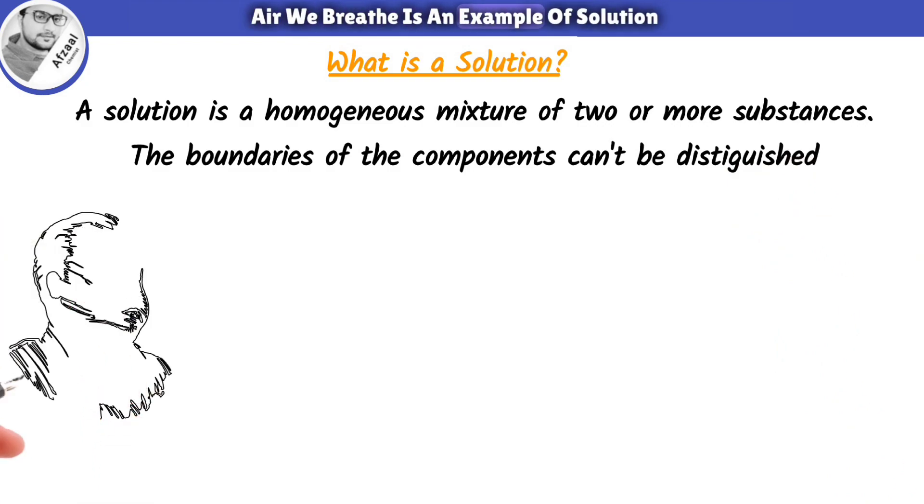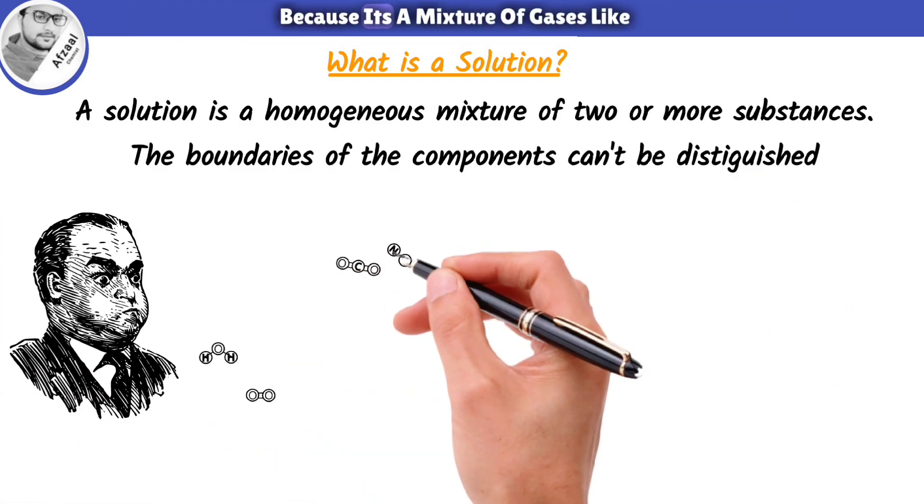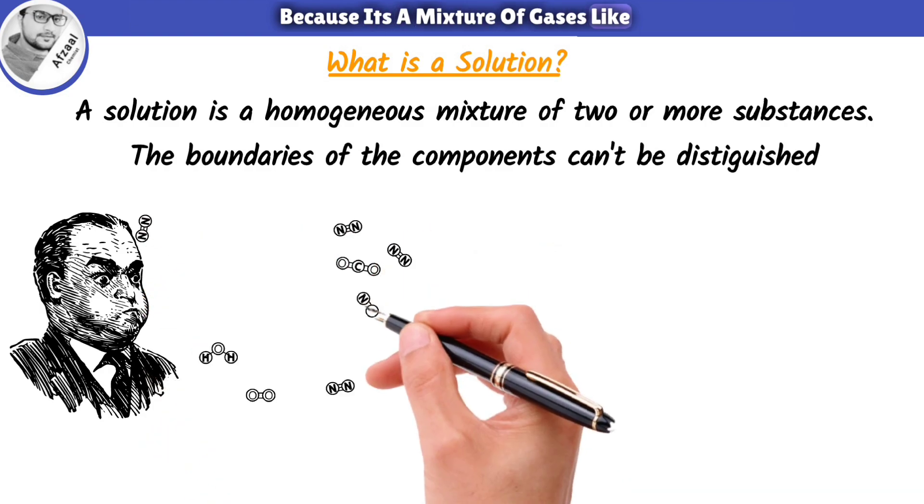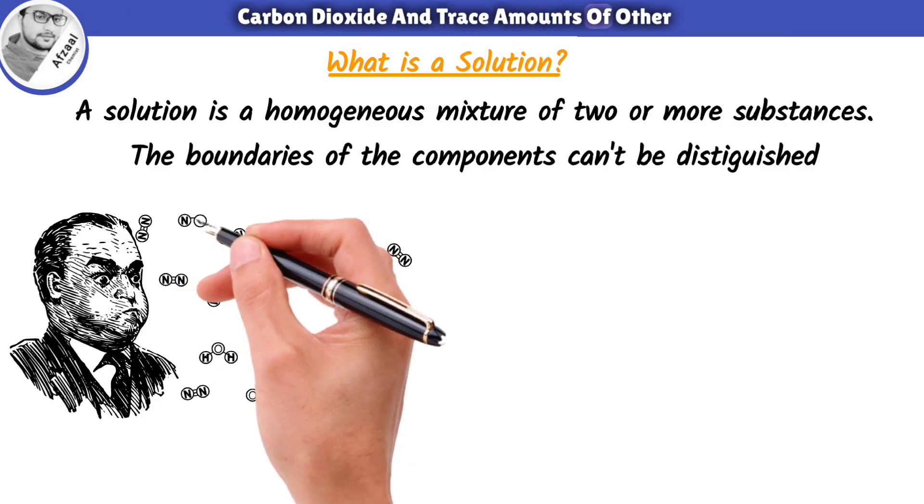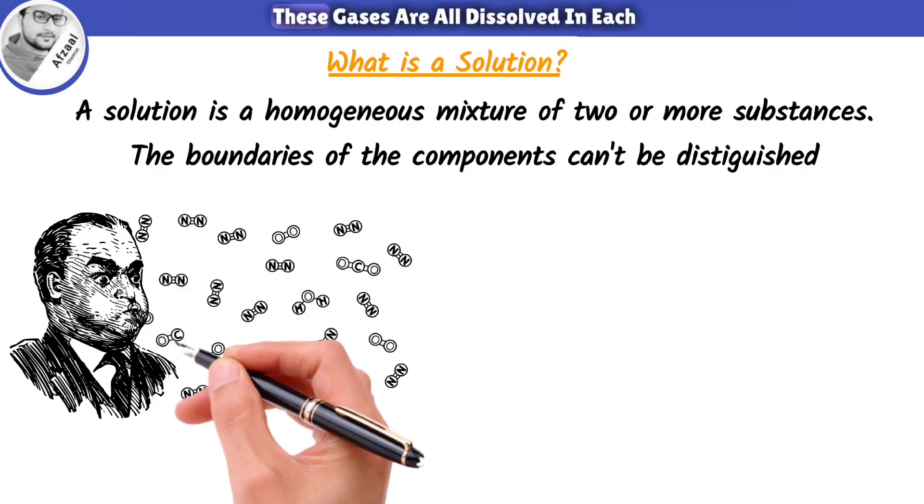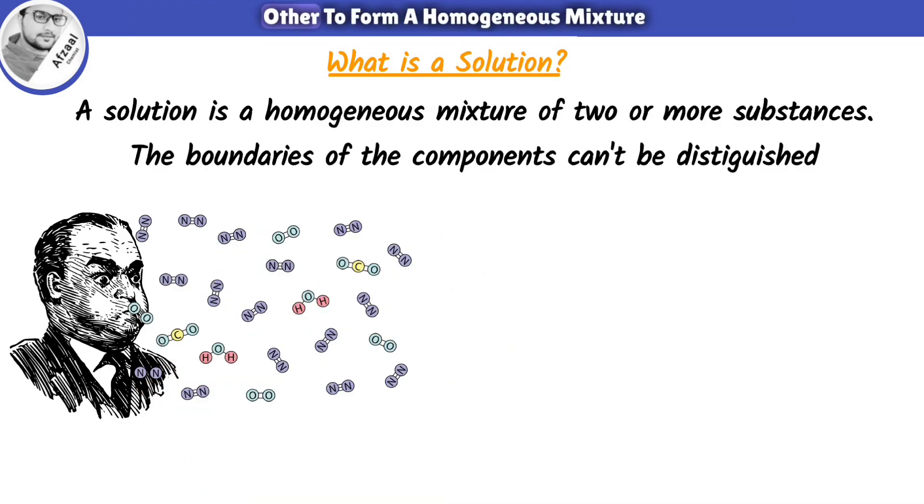For example, air we breathe is an example of solution because it's a mixture of gases like nitrogen, oxygen, carbon dioxide, and trace amounts of other gases. These gases are all dissolved in each other to form a homogeneous mixture. So air is a solution of different gases.